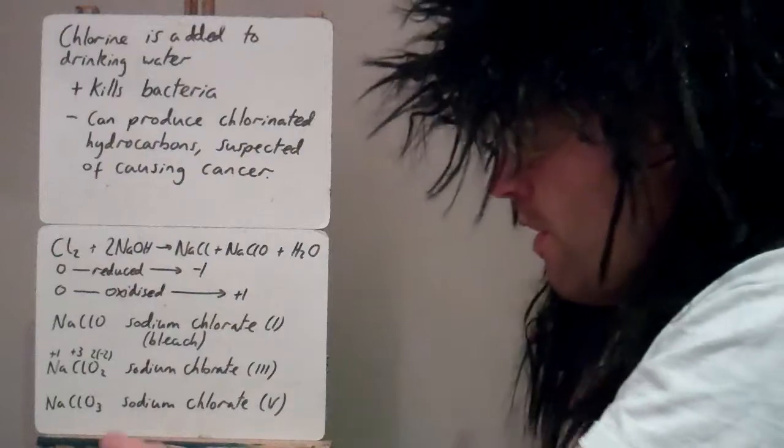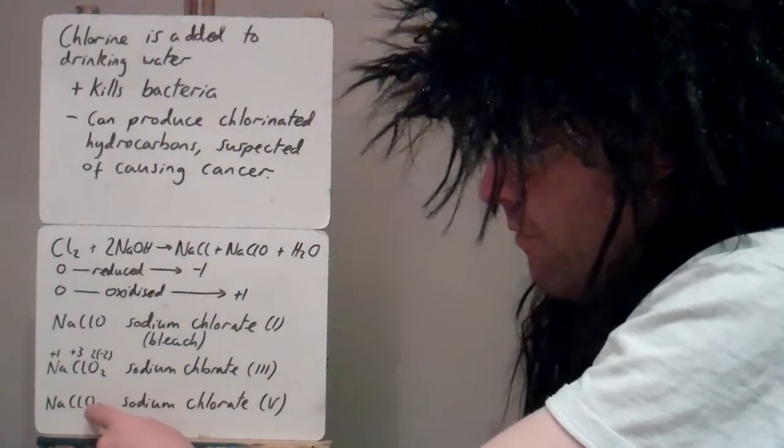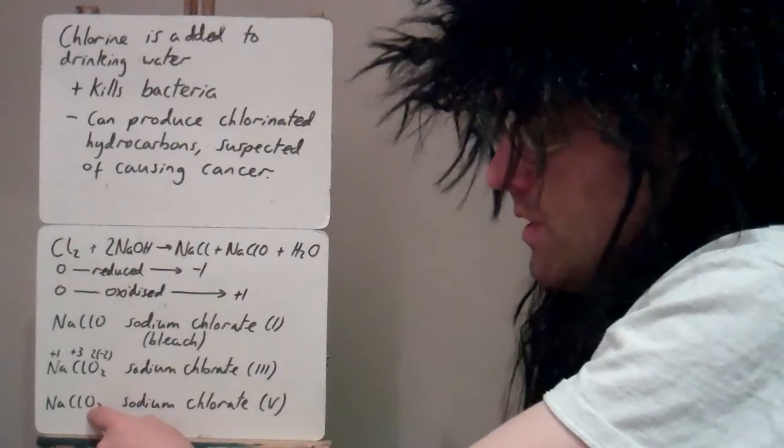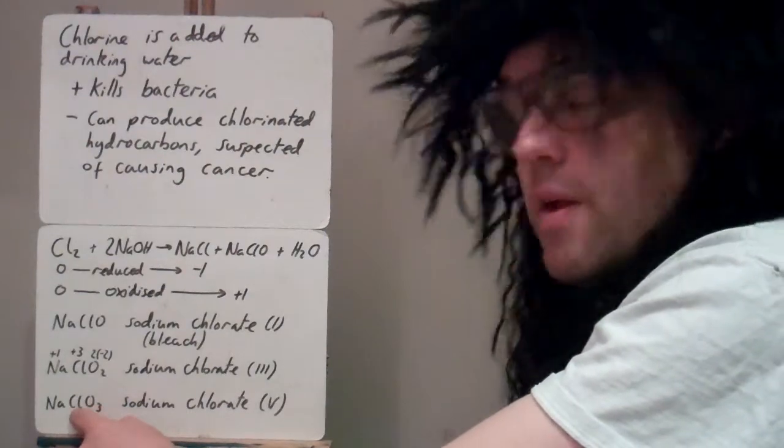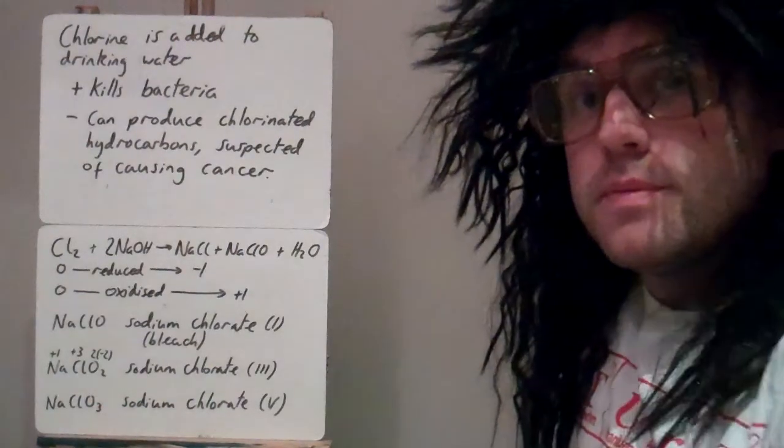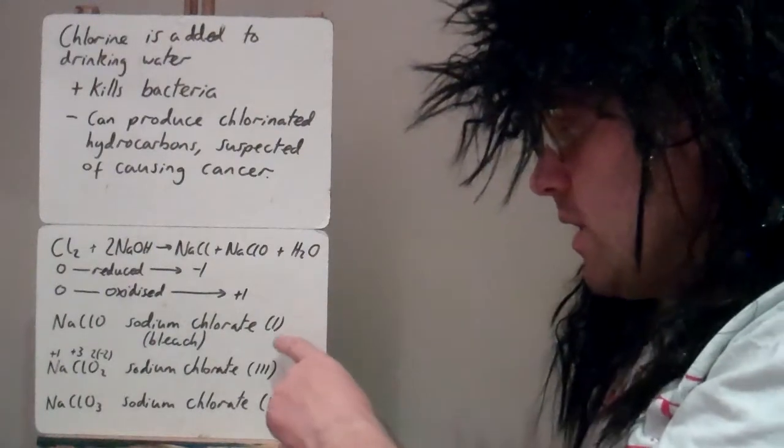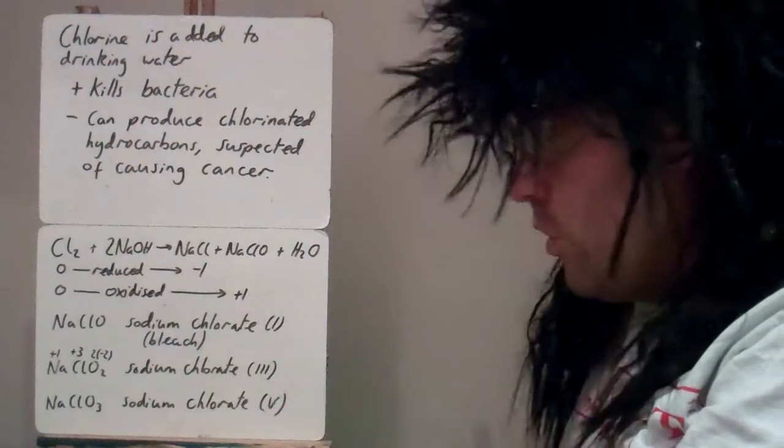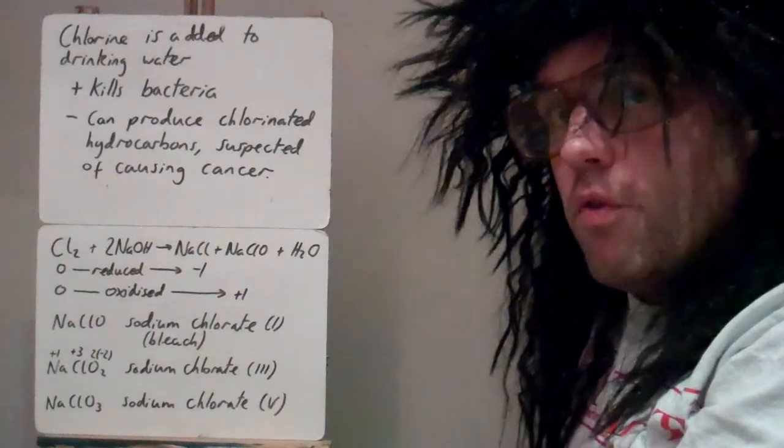We can also get sodium chlorate five. Here we've got plus one, three oxygens at minus two equals minus six, so the chlorine here must be plus five. These Roman numerals represent the oxidation number of the chlorine, not the number of oxygen.